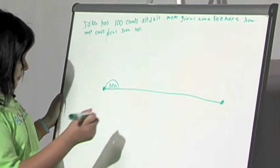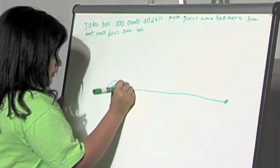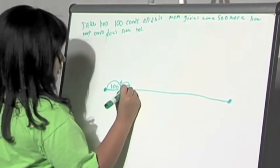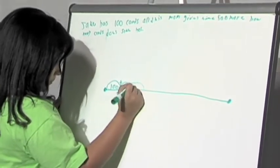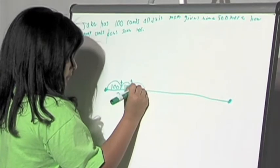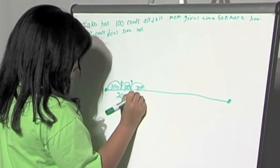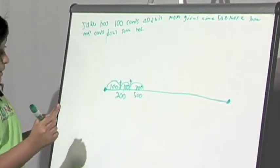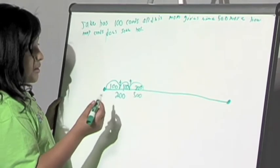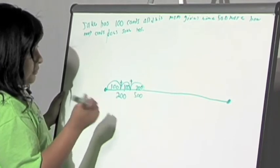And then plus 100, that is 200. And 200 plus 300 is 500. So, what I did right now is I add 100 plus 100 equals 200. Then I add 200 plus 300 equals 500.